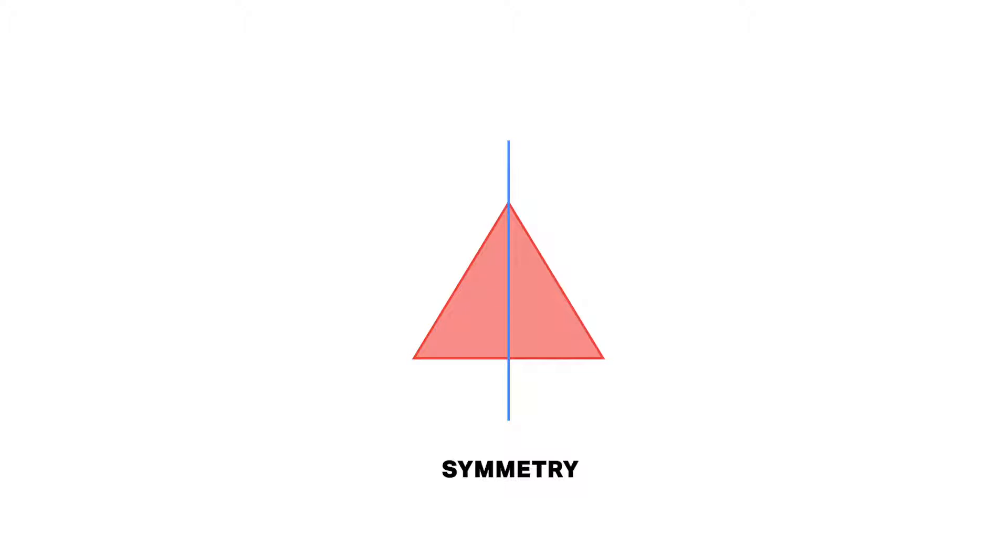What is a line of symmetry? A line of symmetry is a line that cuts a shape in half so that both halves match when you fold one over.